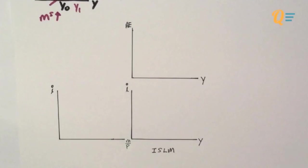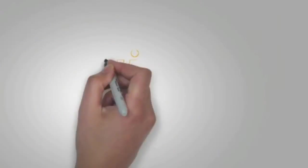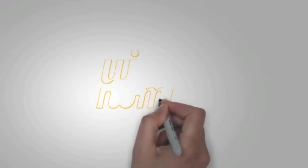Quick disclaimer before I continue: you don't have to draw these two extra diagrams — the Keynesian cross and the money market — in your exams. I'm drawing them to illustrate exactly how the IS-LM model works. If you do not wish to draw this in the exams, no problem. Just make sure you are able to articulate in words how the IS-LM model works.